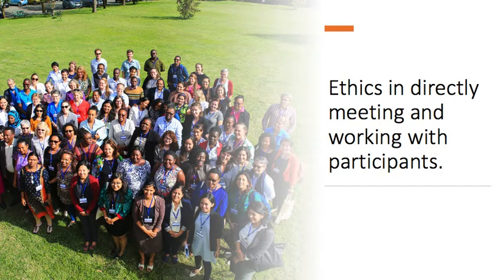You also need to think before you start working directly with people about designing the research systems so that they're accessible to everybody. If you're asking people to sign up to attend something, you have to make sure that the information about the event reaches all people, including marginalised and excluded populations — those without telephones, those who don't look on community notice boards, and those who are mainly not in your main networks. Sometimes the only people who attend meetings with researchers are those who have previously attended workshops with researchers. So if you're going to think about the ethics of who's going to be involved and whose voice you're going to have within your research, you have to think about the systems and structures you're setting up right from the start.